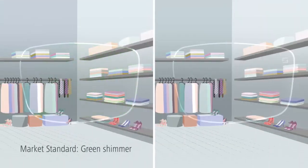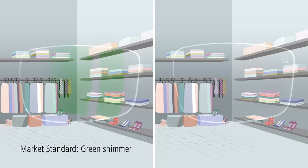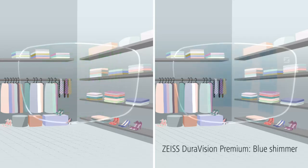Standard anti-reflective coated lenses have a green shimmer. Zeiss DuraVision premium coatings on the other hand give lenses a light bluish shimmer.